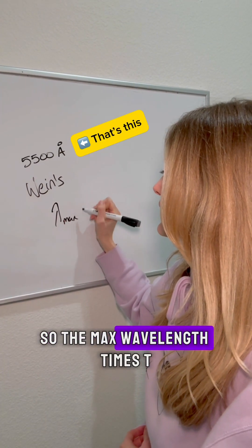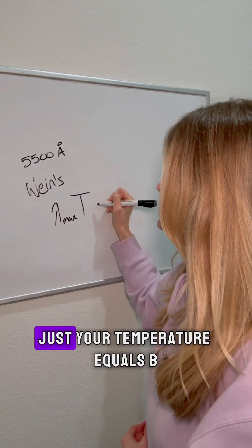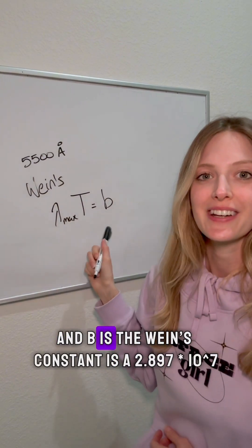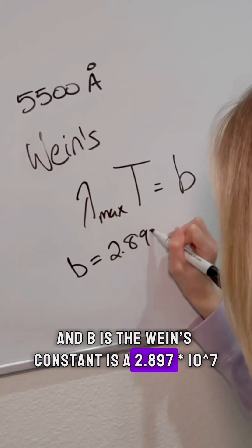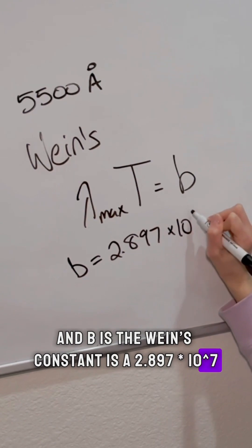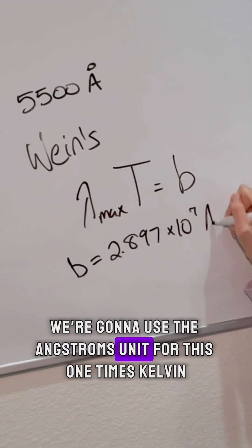So the max wavelength times T, which is your temperature, equals b. And b is the Wien's constant. It is 2.897 times 10 to the 7th. We're going to use the angstroms unit for this one, times Kelvin.